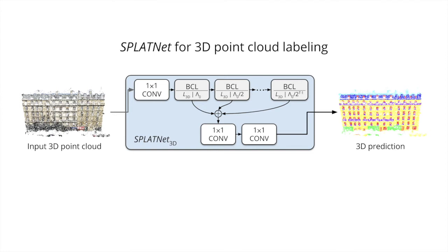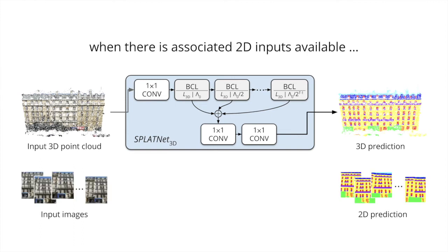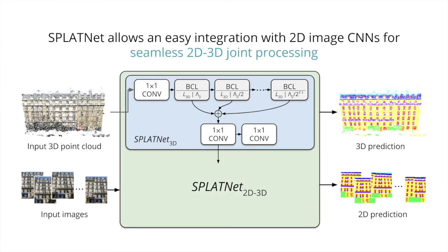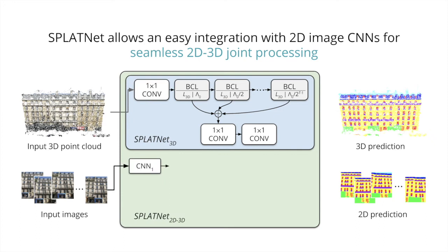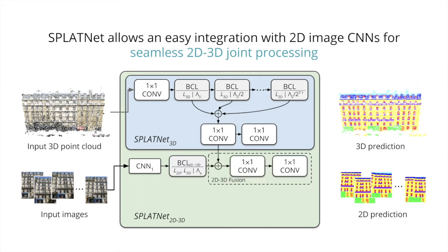BCLs are differentiable and thus the network is end-to-end trainable. When there is not only 3D data but also some associated 2D images, our SplatNet architecture allows easy integration with 2D image CNNs for seamless 2D-3D joint processing. 2D images are first processed with a standard image segmentation CNN, whose output is projected into 3D points using a BCL and then fused with features from the 3D network, finally leading to 3D predictions.